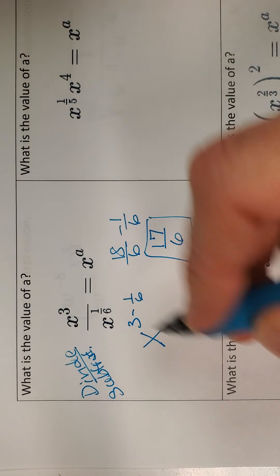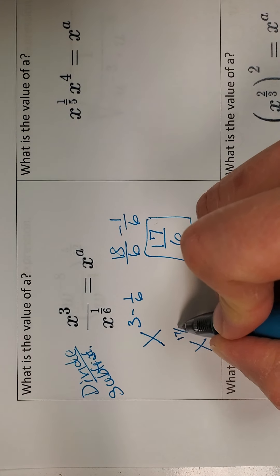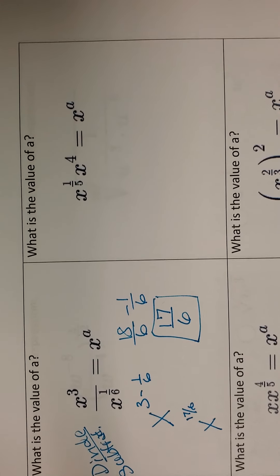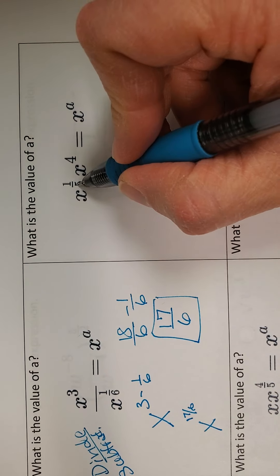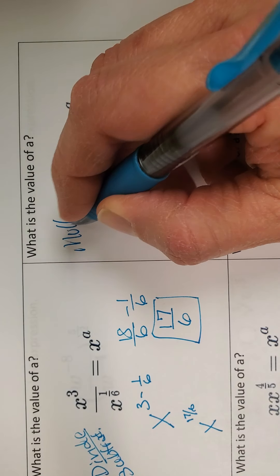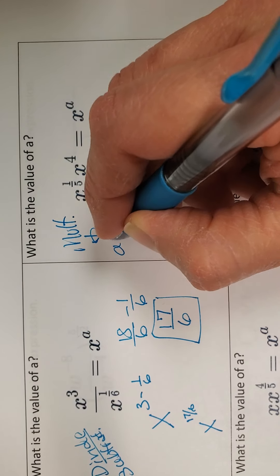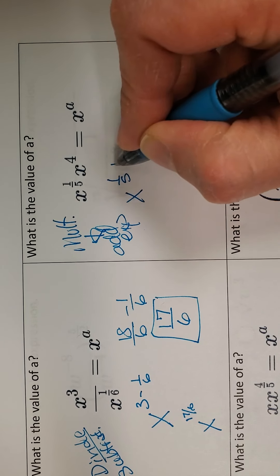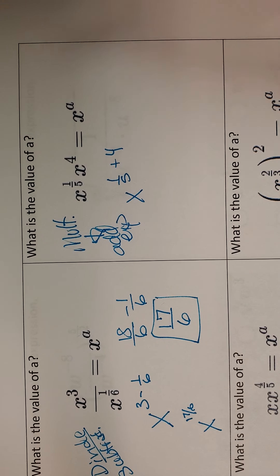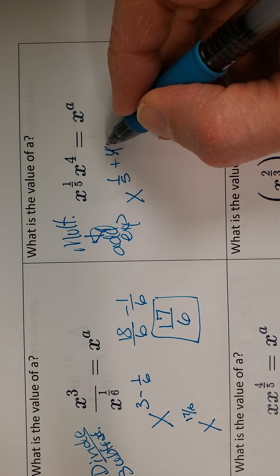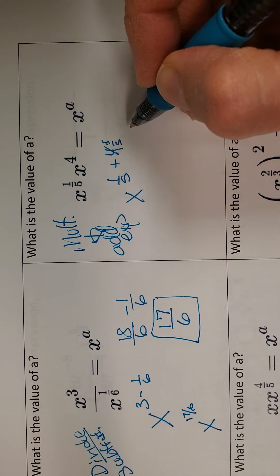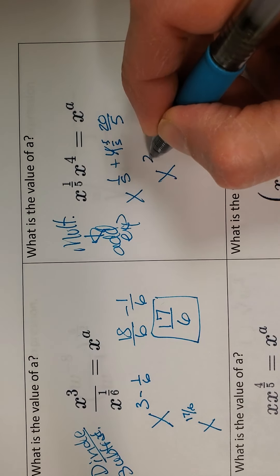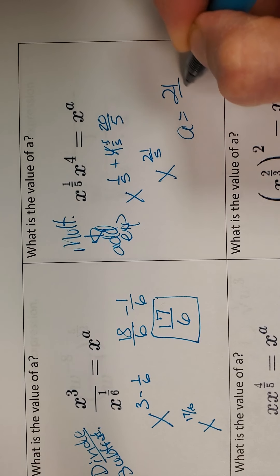If we were rewriting it, we'd say x to the 17 sixths, but since they're only asking for a, you don't need to write that. Here, I recognize there's multiplication going on, and multiplication means to add exponents. So I'm going to add 1 fifth plus 4. I need a common denominator, so I change 4 to 20 fifths, then add to get x to the 21 fifths. So a equals 21 fifths.